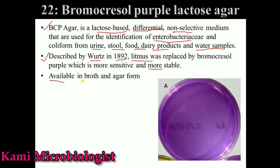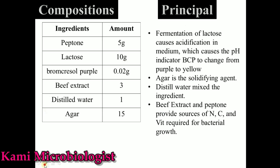This media is available in the form of broth as well as agar, but mostly we use the agar form — broth is used very less. The composition of this media includes: peptone 5 grams, lactose 10 grams, bromocresol purple indicator 0.02 grams, beef extract 3 grams, distilled water 1 liter, and agar 15 grams.